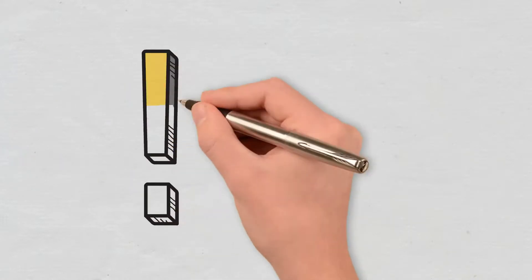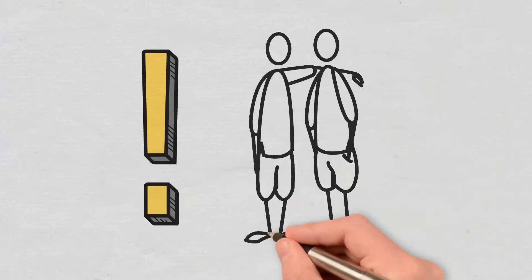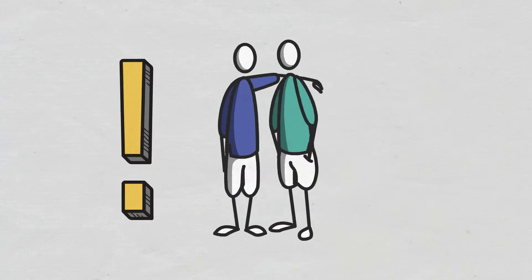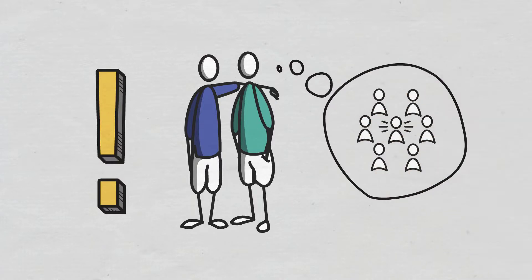However, a disadvantage is that trust among participants is required. Then, some experts consider that quorum slices can actually lead to centralization, which is the opposite of what an FBA system tries to achieve.